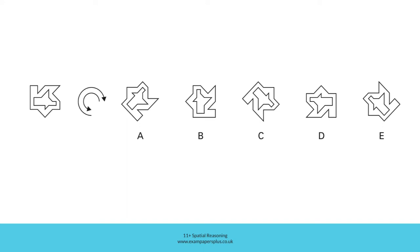In order to answer this question, we're going to consider this figure and think about how it would look if it rotated in a clockwise or an anti-clockwise manner. The resulting figure is represented by one of these five answer options. In order to answer the question properly, we can take a closer look at this figure and its features.